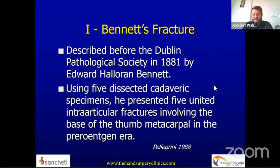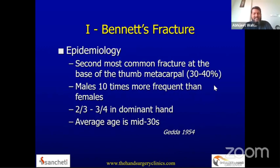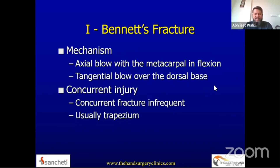Bennett's fracture was first described by Edward Bennett at the Dublin Pathological Society in 1881. He presented five united intra-articular fractures, and that is how this fracture has borne his name ever since. It is the second most common fracture at the base of the thumb metacarpal, accounting for almost 40 percent of such fractures. Males are more predisposed due to injury, and it is often seen in the dominant hand in patients in their mid-30s.